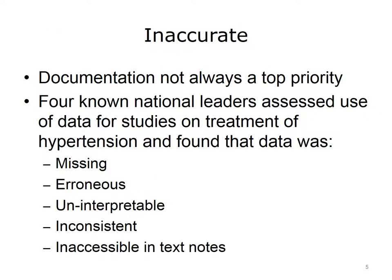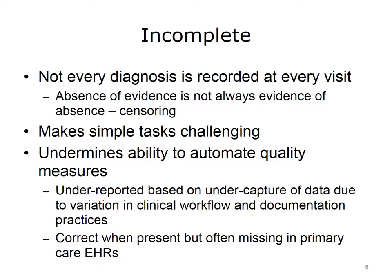The data in the electronic health record may be inaccurate. Documentation is not always a top priority for busy clinicians, and for a variety of reasons they may enter data into the record that's not accurate. One analysis of EHR systems used by four known national leaders in healthcare assessed data for studies on the treatment of hypertension. They found five categories of reasons why the data were problematic: some data was missing, other data was erroneous, some data was uninterpretable, other data was inconsistent, and a great deal of data was inaccessible in text notes.